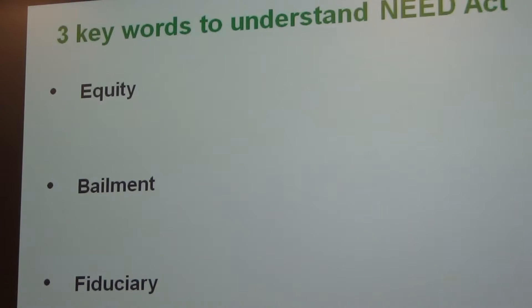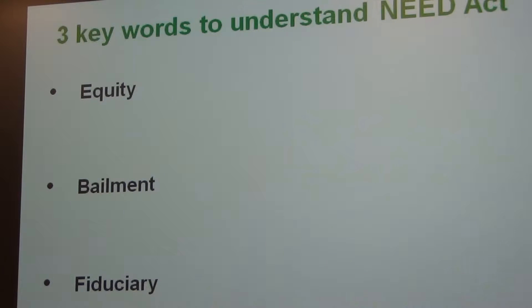Three key words to understanding the NEED Act: equity, bailment, and fiduciary. Bailment — I hadn't actually heard of this word before. But this is what money legally becomes under the NEED Act. It means property that is owned by somebody, but they put it into safekeeping with somebody else — like self-storage places where you store your furniture when moving house. That's called bailed property. The furniture is still yours — you're still the owner — but the self-storage place is looking after it for you.